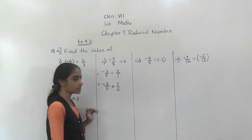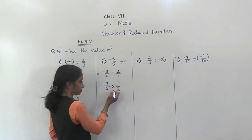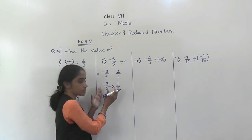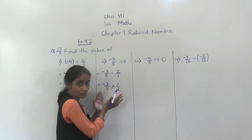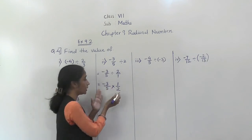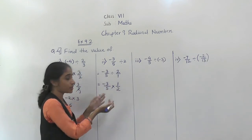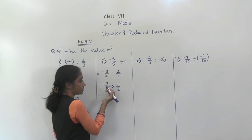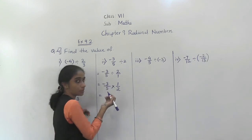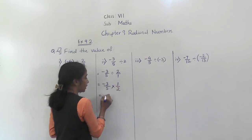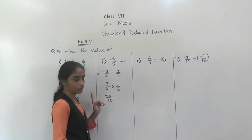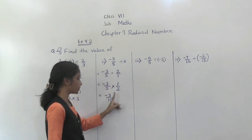So write the reciprocal. Now check whether we can do the simplest form here. Simplest form and lowest term are both the same. We cannot do the simplest form because 3 is prime, 5 is prime, and 2 is a prime number. So minus 3 into 1 is minus 3. 5 twos are 10. This is negative and this number is positive, so the product will be negative. Answer: minus 3 upon 10.